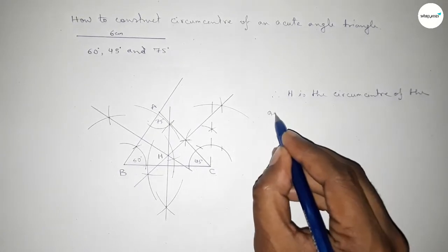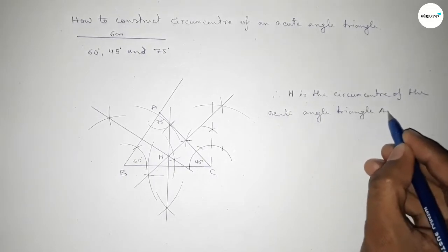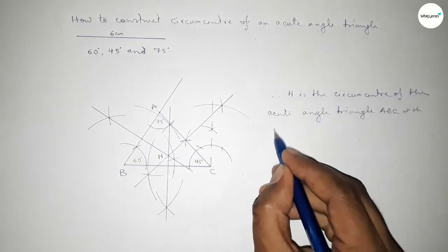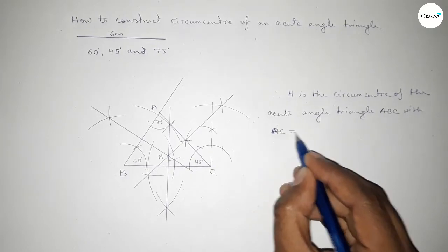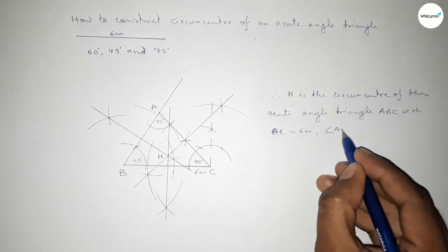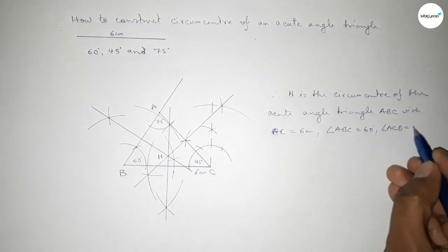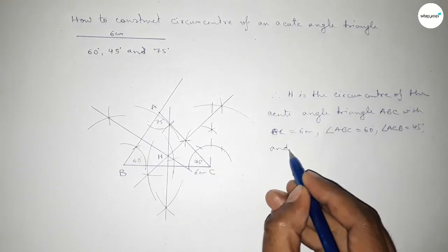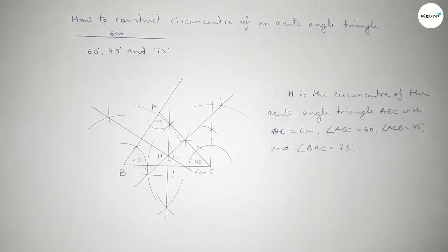The triangle has BC equal to six centimeters, angle ABC equal to 60 degrees, angle ACB equal to 45 degrees, and angle BAC equal to 75 degrees. That's all — thanks for watching, please share it with your friends.